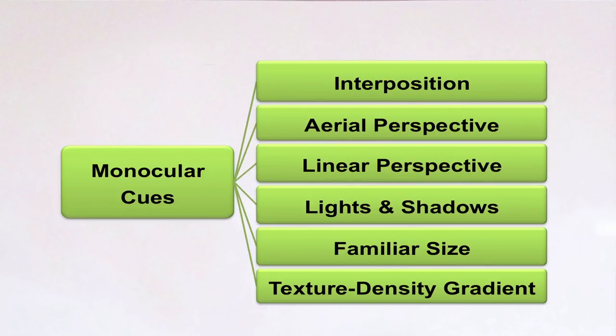Binocular disparity: objects nearer and farther than the fixation point project their retinal images onto non-corresponding or disparate areas of the two retinas. Greater the distance from the fixation point, greater will be the binocular disparity — disparity increases as the distance of the object from the fixation point increases. This retinal disparity is the cue about the distance of the object from the fixation point.